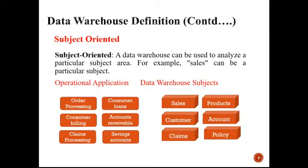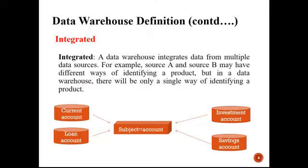For example, consider a college where a student's data record includes the student's name, father's name, mobile number, address, Aadhar number, and other details. Such records from many years of students are combined into a data warehouse. The student's name, father's name, roll number — all these fields are called the subjects of that data warehouse. According to these subjects, we filter and retrieve whatever information we need.